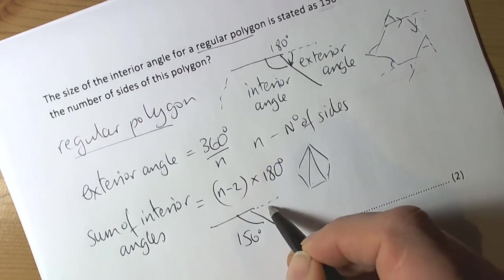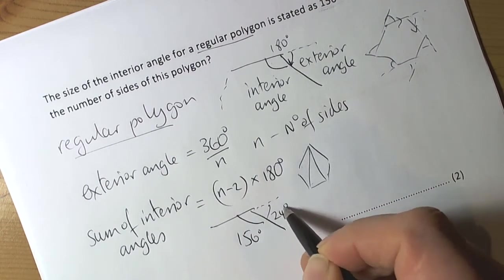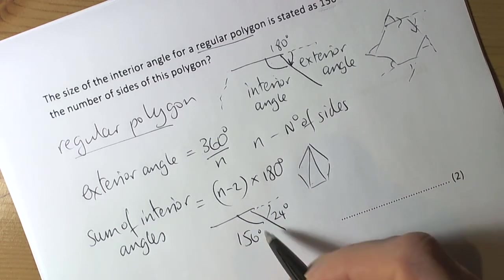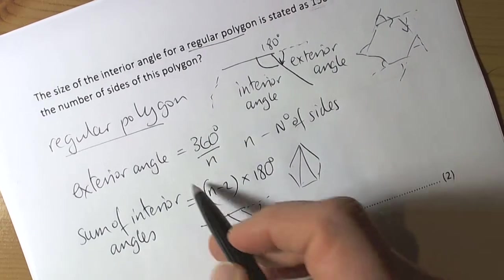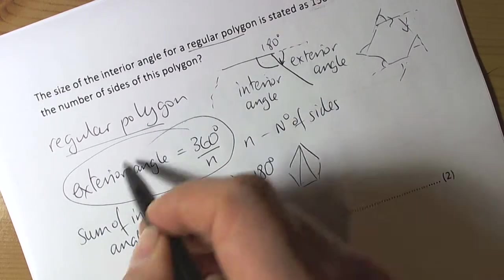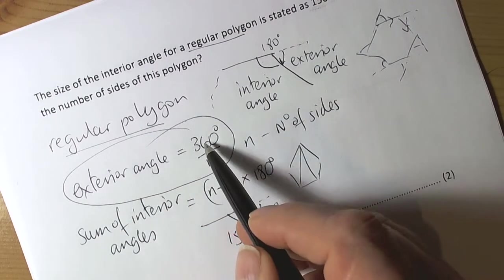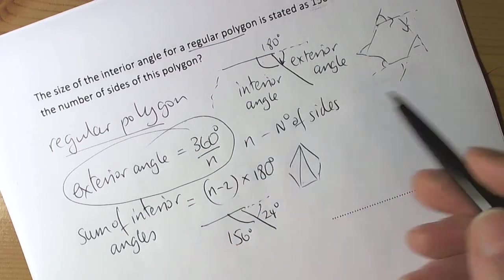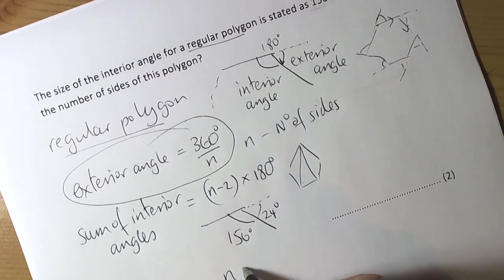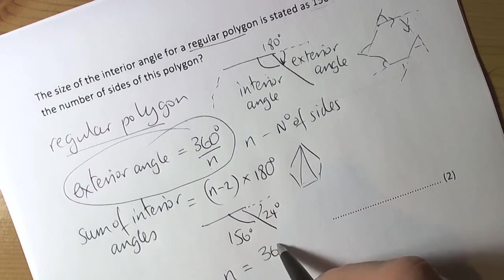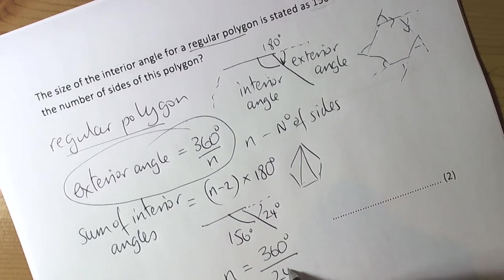Therefore, that angle there must be 24 degrees—they add up to 180. Because of this rule, we know that the exterior angle of 24 degrees must have been found by doing 360 divided by the number of sides. So n, the number of sides, is going to be 360 degrees divided by 24 degrees, the exterior angle.